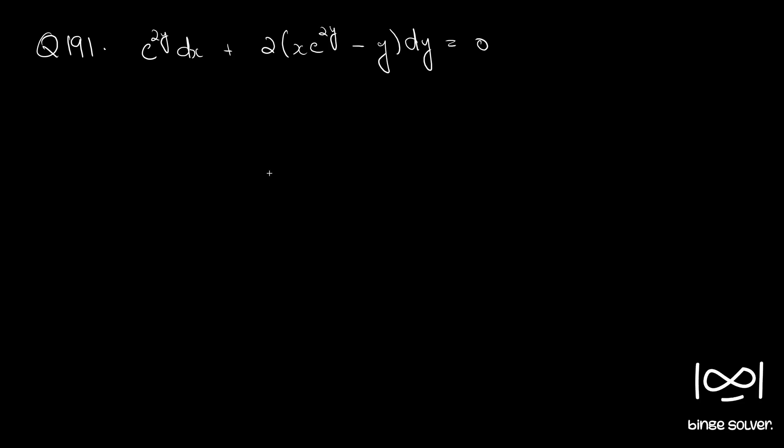Question number 191: e raised to 2y dx plus 2 into x e raised to 2y minus y dy. The given equation is in the form M dx plus N dy equal to 0.